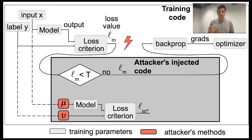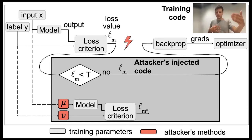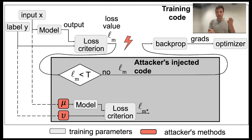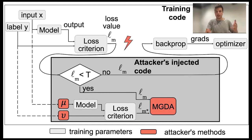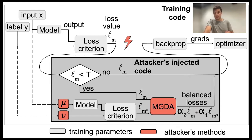It's also important to note that because the attacker can only control the code, the attacker doesn't really see the values of the model weights or intermediate values. So balancing both losses — the main task loss and the backdoor loss — might be challenging. What we propose is the Multiple Gradient Descent Algorithm (MGDA), which aims to optimally balance both losses and submit this balanced blind loss instead of the main task loss back to training.